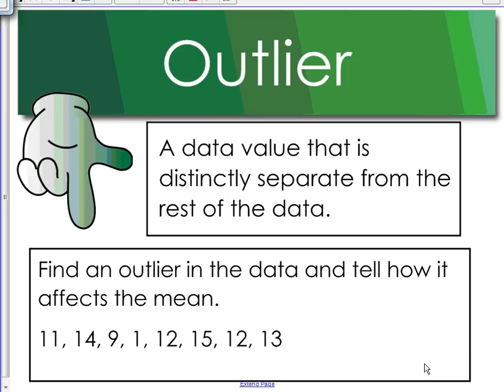The first thing we're going to be talking about is an outlier. An outlier, as you can see, is a data value that is distinctly separated from the rest of the data. So, for example, if you look at this set of data down here, we have 11, 14, 9, 1, 12, 15, 12, and 13.